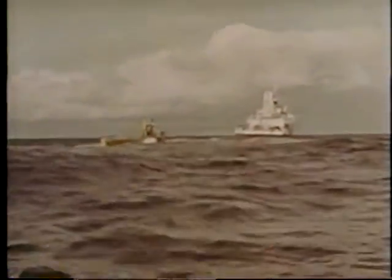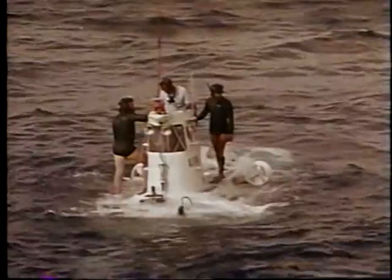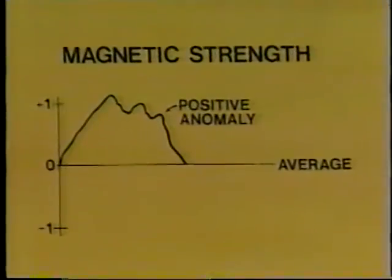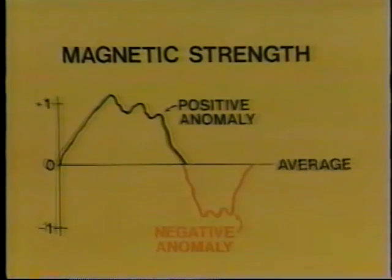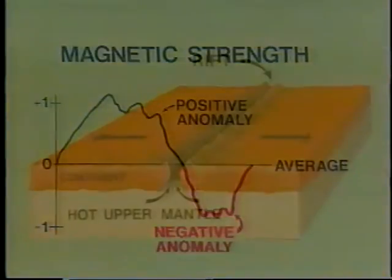A magnetometer can be towed by a ship or plane over the Earth to measure any differences in the strength of the Earth's magnetic field. Rocks whose magnetic fields are oriented in the same direction as the Earth's present field reinforce the Earth's field, giving an above-average magnetic reading — this is called a positive magnetic anomaly. If the rocks of an area have a reversed magnetic orientation, they partially cancel the Earth's present field and give a below-average reading — a negative magnetic anomaly.